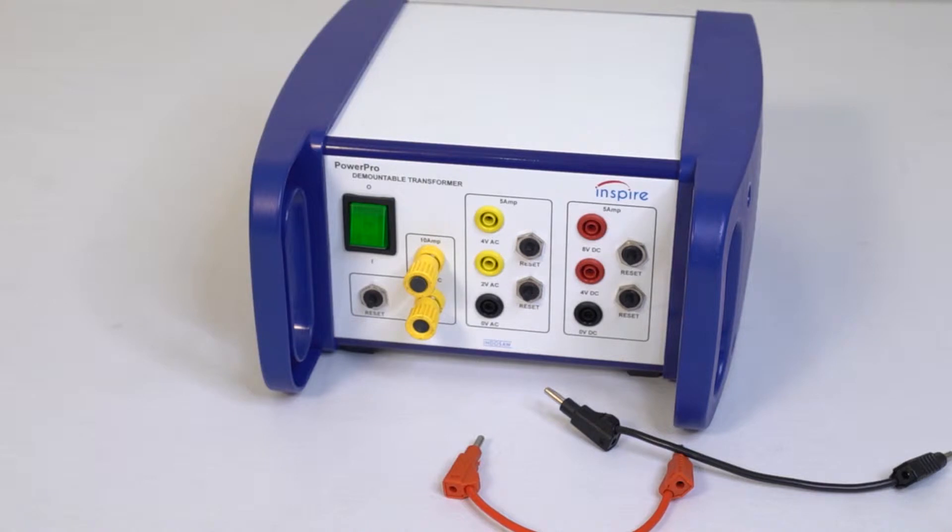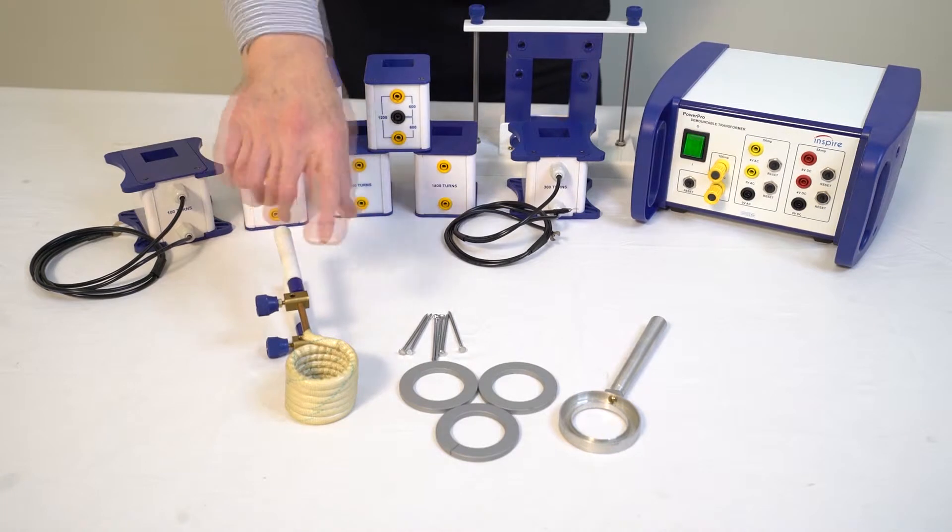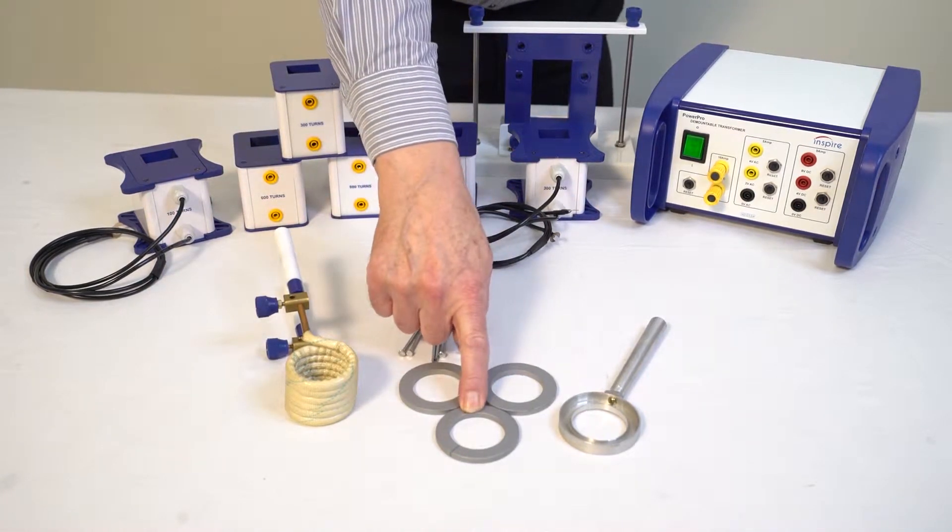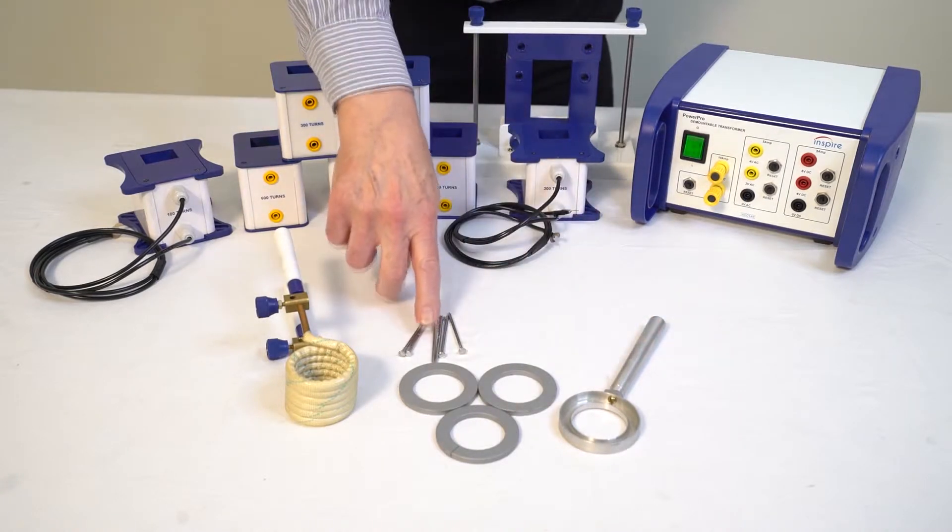The induction accessory set includes the 6-turn nail melting coil, two solid and one split aluminium ring, the solder trough and some nails.